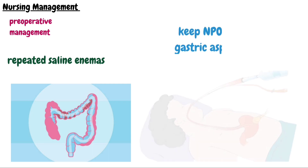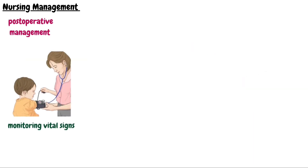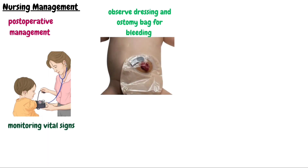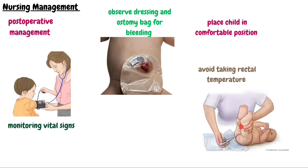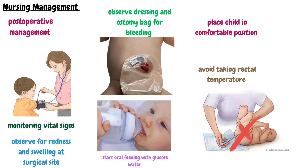Repeated saline enemas and bowel wash with antibiotic solution such as neomycin are done in older children to prepare the bowel for surgery. Withholding feeds and nasogastric aspiration are done the night before surgery. Post-operative management involves monitoring vital signs, observing abdominal dressing or ostomy bag for bleeding, placing the child in a comfortable position, avoiding rectal temperature measurement, observing for redness, swelling, and drainage at the surgical site, and starting oral feeds with glucose water and milk as soon as bowel sounds return.